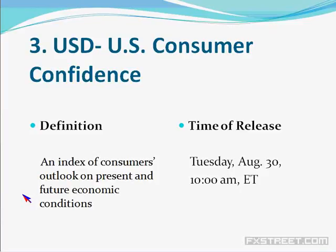Another major spotlight event from the United States — number three for next week on Tuesday — is the Consumer Confidence Index. Anyone paying attention to financial news headlines in recent months would know the headwinds: rising commodity prices, the whole debt ceiling debacle, and signs of a slowing economy. The Conference Board Consumer Confidence Index is expected to register a steep decline from 59.5 in July to 55 in August — another potentially weak economic report from the United States.